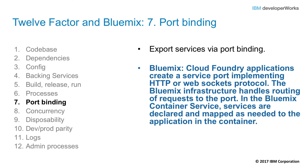Factor number seven: port binding. This factor says to explicitly export your services via port binding, as an alternative to depending on an external web server like Apache or Tomcat to handle incoming requests. A 12-factor app is completely self-contained and binds as a service to a network port. When running locally, the application will bind to a workstation port and be accessed, for example, with HTTP at a URL like http://localhost:3000. On Bluemix Cloud Foundry, the application will bind to the port and Bluemix will route incoming traffic to the application instance or instances, so an app developed and tested locally can work seamlessly on IBM Bluemix without any code changes.